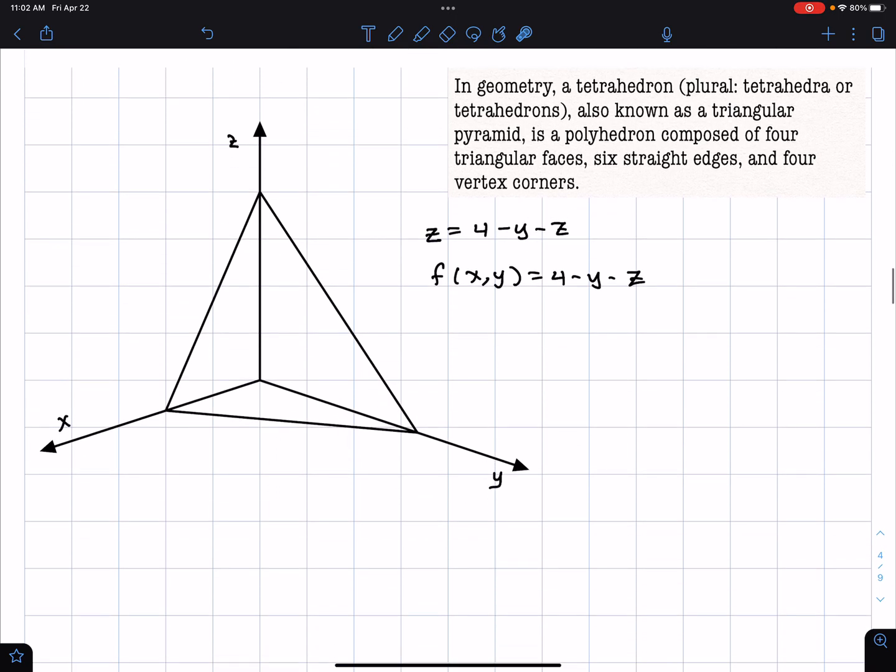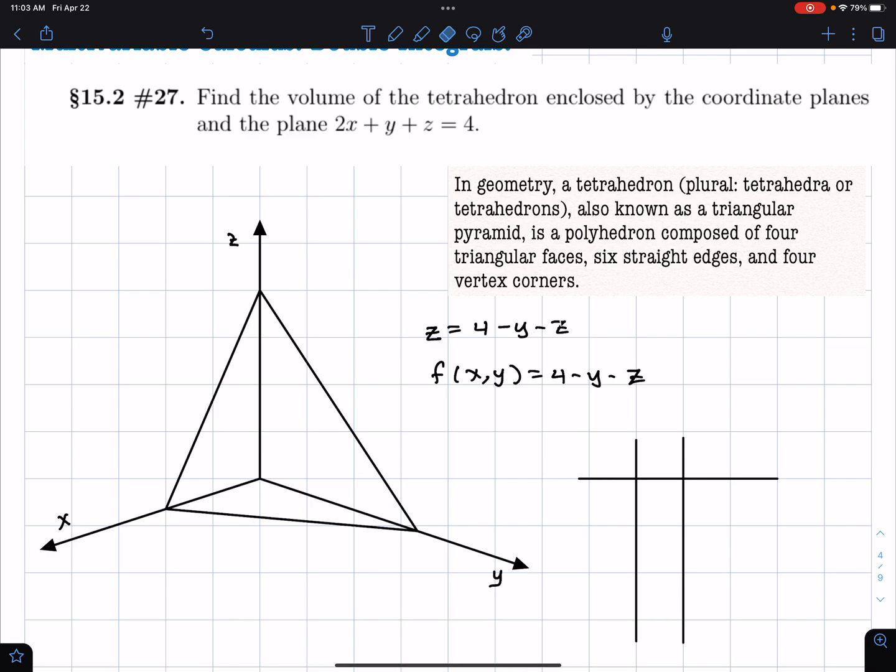Now, one of the ways to sort of get a nice drawing for that plane is to find intercepts, x and y and z intercepts. So if I let y and z both equal 0, they disappear and I have 2x equals 4. So if y and z are 0, then 2x equals 4 and x equals 2. If I let x and z equal 0, I get y equals 4. And if I let x and y equal 0, I get z equals 4.